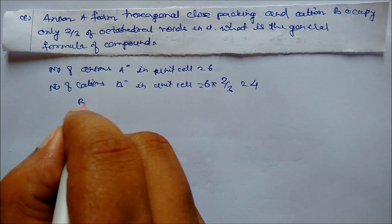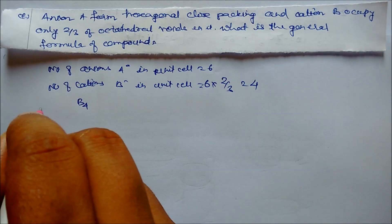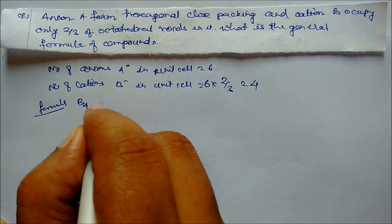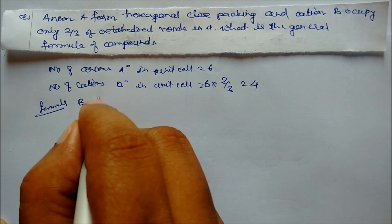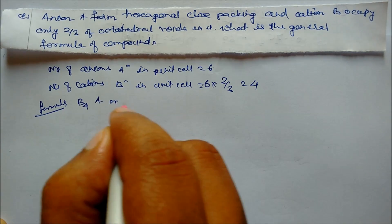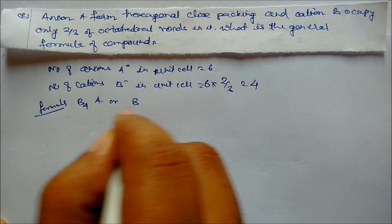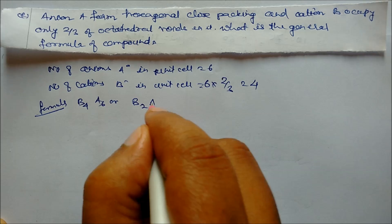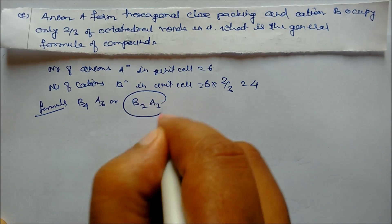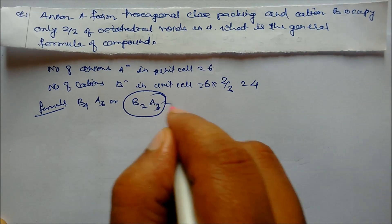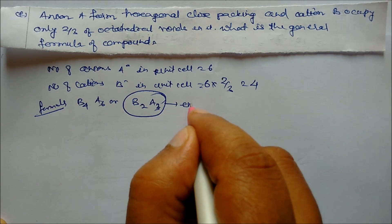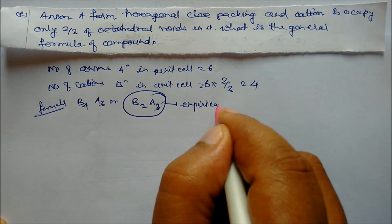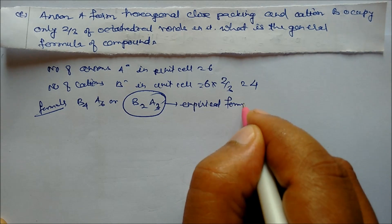So the formula is B₄A₆, or simplified, B₂A₃. This is the answer — the empirical formula.